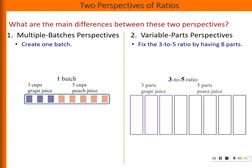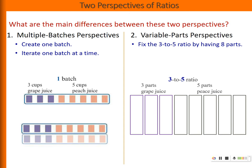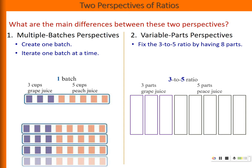We first fix the ratio of three to five by having a total of eight parts — three parts for the grape juice and five parts for the peach juice. For the multiple batch perspective, since we already have one batch, we iterate it, meaning we get more and more batches. In this case, let's say we make four batches, giving us 12 cups of grape juice and 20 cups of peach juice.